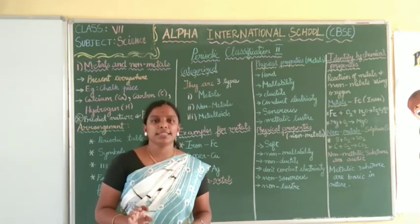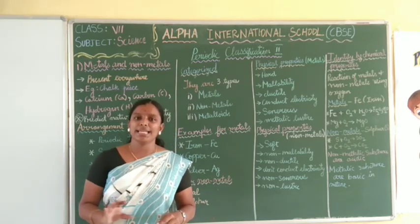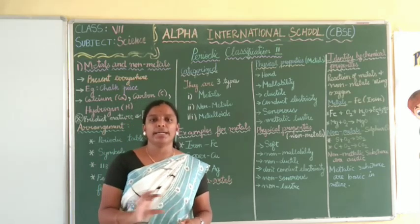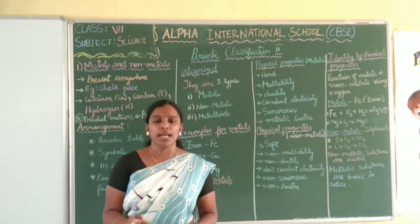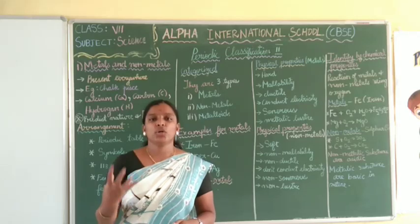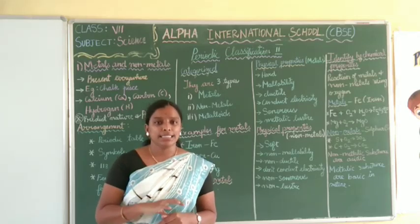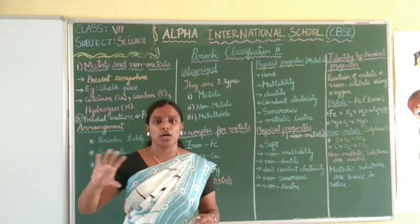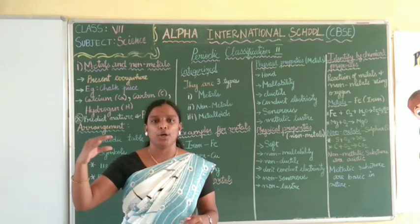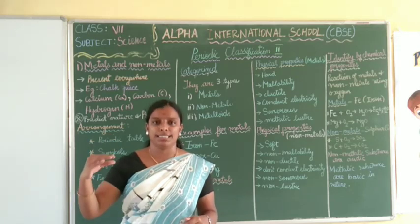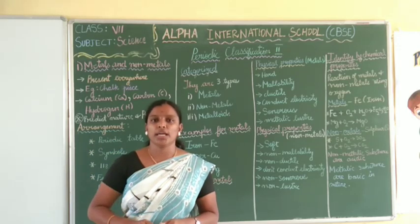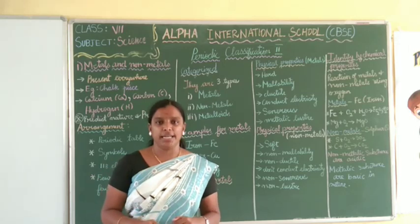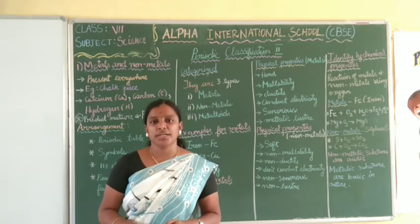All the elements are placed by their symbols. They are not written out fully; instead, a symbol for each element is placed according to its atomic number, mass number, and position in the periodic table.